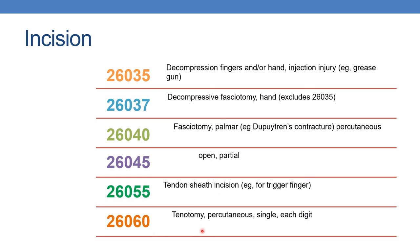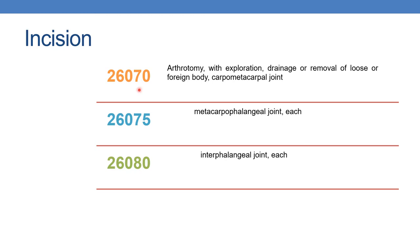The next is 26060: tenotomy percutaneous, single, each visit. The next is 26070: arthrotomy with exploration, drainage or removal of loose foreign body, carpometacarpal joint. For metacarpophalangeal joint, each, you assign 26075. And 26080 is for arthrotomy with exploration, drainage, or removal of loose or foreign body, interphalangeal joint.